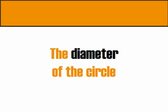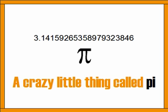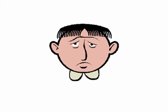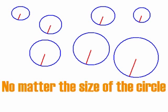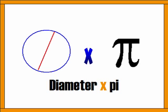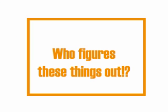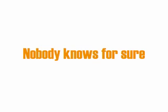Pi is 3.1415926535897, and so on. No matter how big the circle or how small, the relationship is exactly the same: the diameter of the circle times pi gives us the distance around the outside. You've got to wonder who figures these things out.